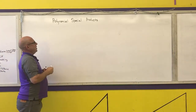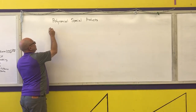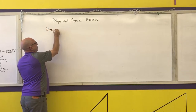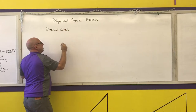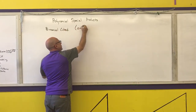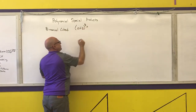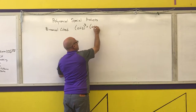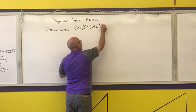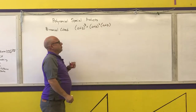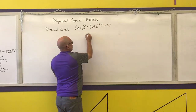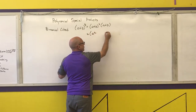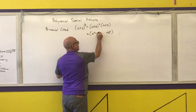Our next pattern is a binomial cubed. For example, a plus b cubed. What I want you to realize is a plus b cubed is the same thing as a plus b squared times a plus b. We already know what a plus b squared is: a binomial squared is a trinomial — the first term is the first term squared, the last term is the last term squared, the middle term is 2 times the product.